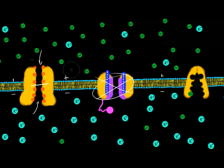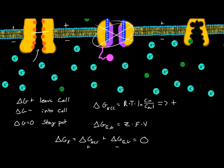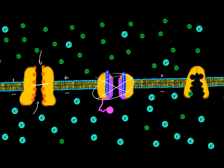So what's the voltage required for potassium ions not to want to cross the membrane anymore? That's when total Gibbs free energy equals zero. The voltage is approximately negative 98 millivolts — the membrane is highly positive on the outside and negative on the inside, producing a negative 98 millivolts.